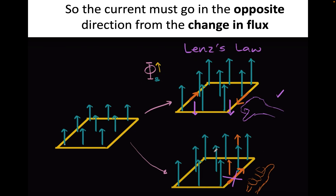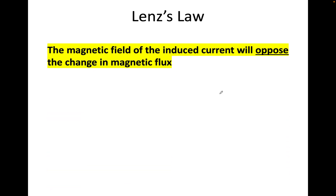So Lenz's Law states that the induced current will be going in the opposite direction. If my flux is getting stronger and bigger, the induced current will want to oppose it — to reduce it, to cancel it out. If the flux was getting weaker, it will want to make it stronger again. It wants to keep everything balanced. So the magnetic field of the induced current will oppose any change in the magnetic flux.